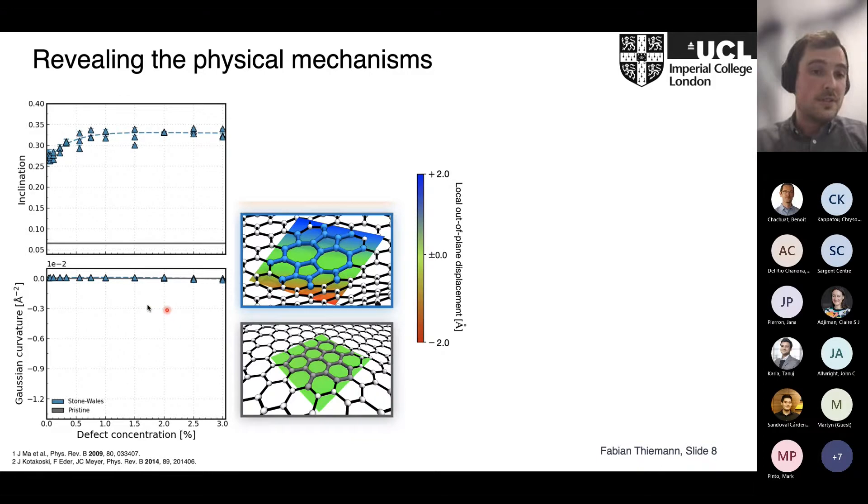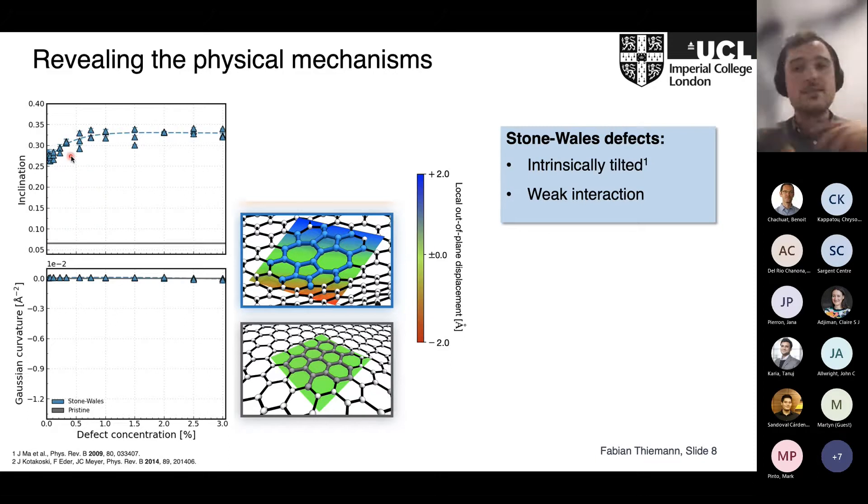If we now look at Stone-Wales defects, we see it's not that different looking just at the curvature—it's not really bending the defect itself. We can see that this high corrugation we observe is also induced by the ability of the defect to tilt. This agrees well with previous quantum mechanical calculations. What's also interesting is that there is a small increase at the beginning, but overall it's relatively small. This suggests that the Stone-Wales defects, while intrinsically tilted, don't really increase with increasing concentration. So there's only weak interaction and coupling between multiple defects on the graphene sheet.